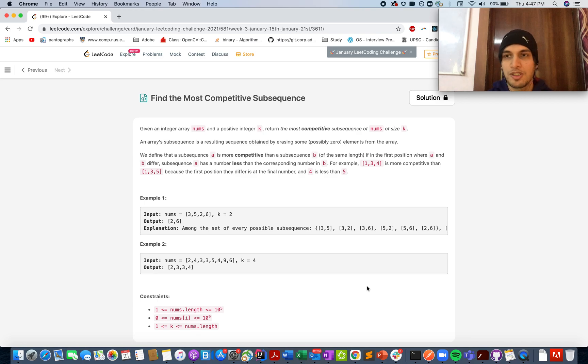Welcome to day 21st January LeetCode challenge. Today's question is Find the Most Competitive Subsequence. In this question you are given an array and a positive integer k. You need to identify the most competitive subsequence of size k that is present in this input array. What are the rules for identifying whether one subsequence is more competitive than another? It is of a lower value than the other one.